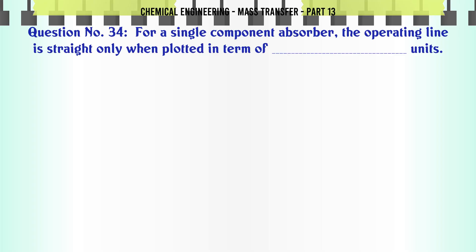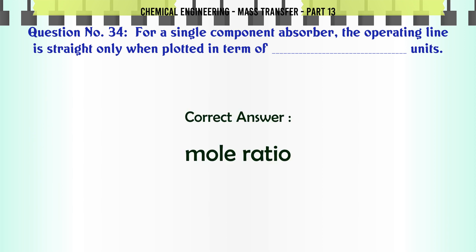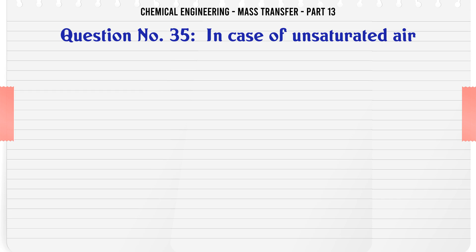For a single component absorber, the operating line is straight only when plotted in terms of ___ units: A. Partial pressure. B. Mole ratio. C. Mole fraction. D. None of these. The correct answer is: Mole ratio.